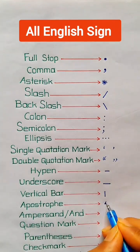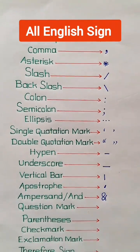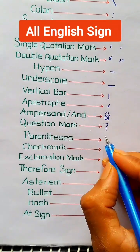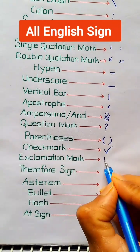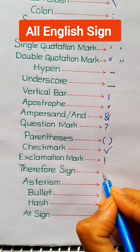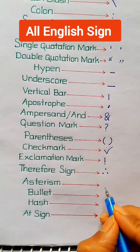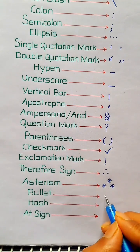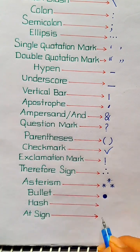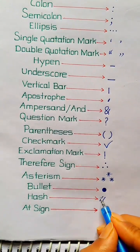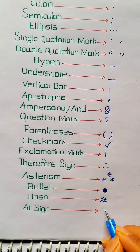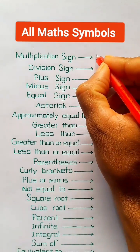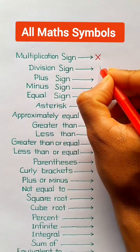Apostrophe, ampersand, optic and, question mark, parenthesis, check mark, exclamation mark, therefore sign, asterism, bullet, hash, at sign, multiplication sign.